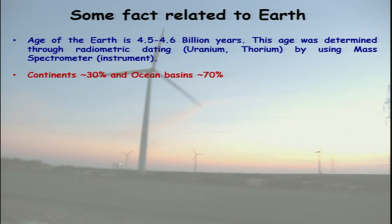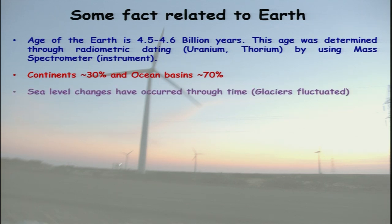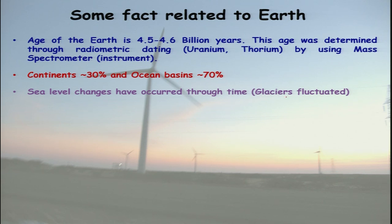Most of the earth's surface is covered by oceanic basins. We also talk about climate change — sea level changes have occurred through time and resulted in fluctuations of the glacial regions or glacial limits.